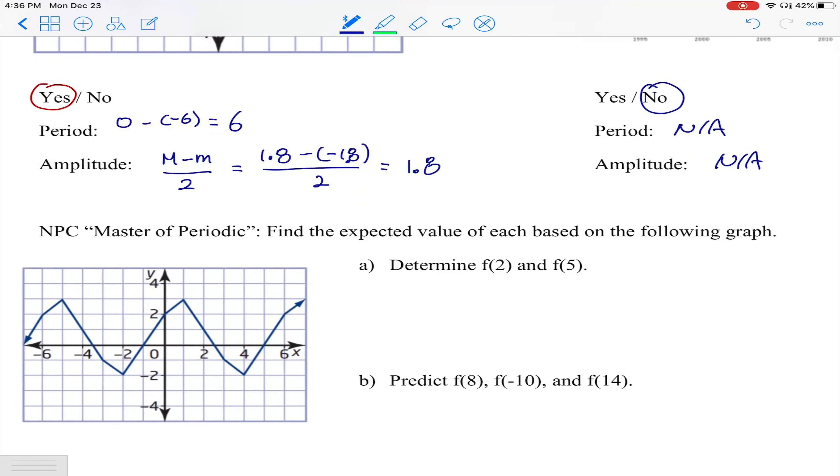It says determine f(2) and f(5). So f(2) here is basically the y value when x equals 2, and I find that value over there, so f(2) equals basically 1. Whereas f(5) is the y value when x is 5, and that is right there - f(5) in this case is 0. That's easy because we can see this on the graph.